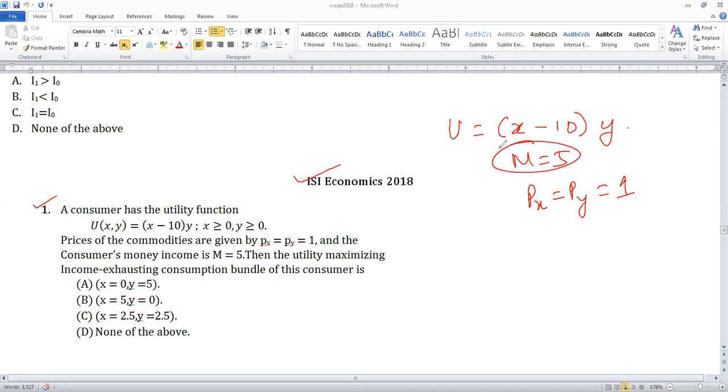Whatever I buy, given the money income equal to 5, always the utility will be negative because x will be less than or equal to 5 always.